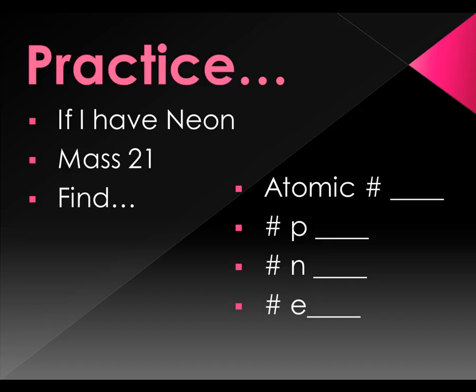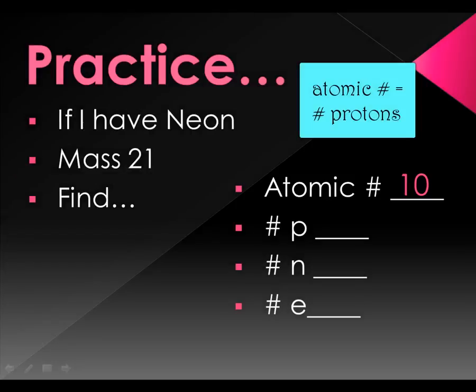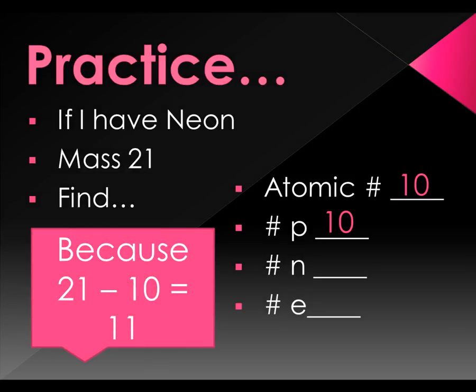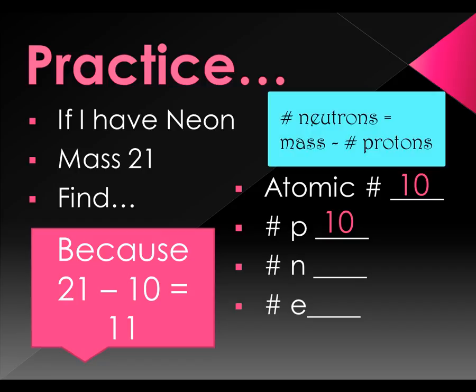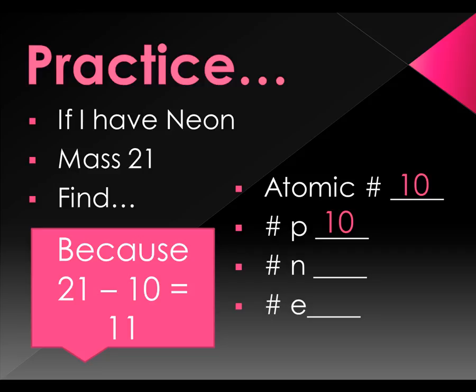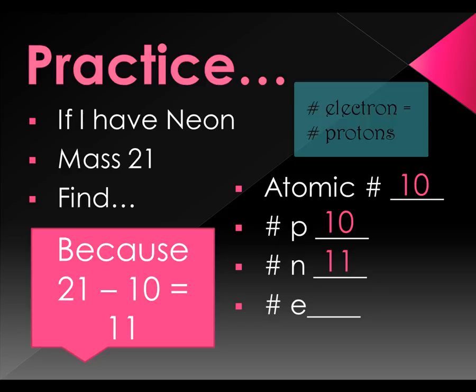I'm going to find neon on my periodic table, and it has the atomic number of 10. That means it also has 10 protons. Now I can find the number of neutrons by taking 21 minus 10, which is 11, because the number of protons plus neutrons is the mass. The number of electrons is always equal to the number of protons, so it's also 10.